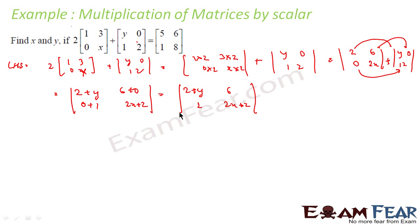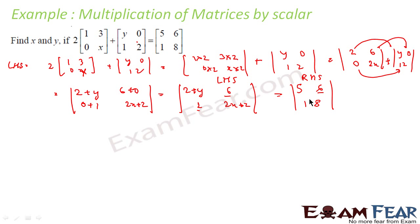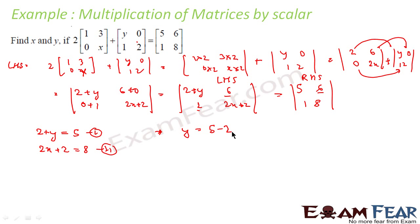This is my LHS and it equals the RHS matrix [5 6; 1 8]. Comparing elements: 6=6 and 1=1 match already. So 2+y must equal 5, giving the first equation; and 2x+2 must equal 8, giving the second equation. From the first equation, y = 5−2 = 3. From the second equation, 2x = 8−2 = 6, so x = 3.